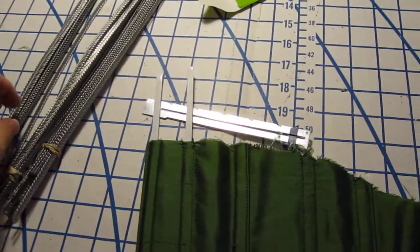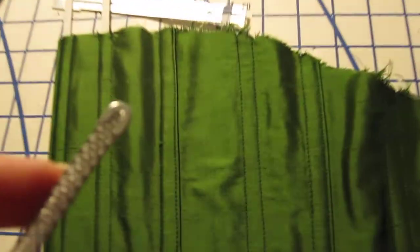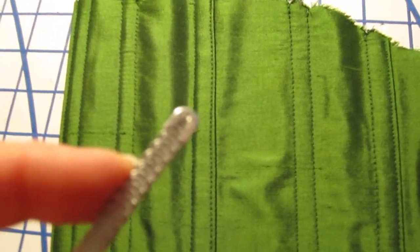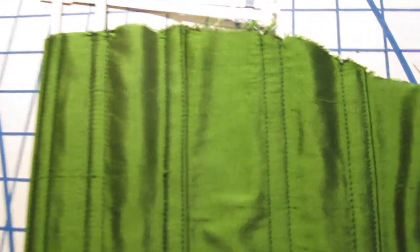And I happen to purchase mine in pre-cut lengths. You can purchase them in bulk and rolls, and you cut your own lengths and you have to tip it. You can see the spring steel has a U-tip on it that's fastened around the tip.